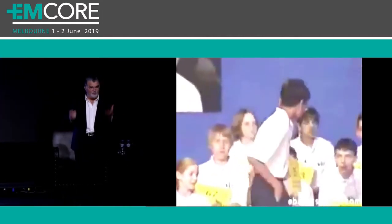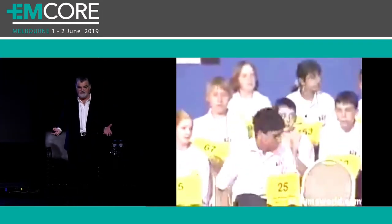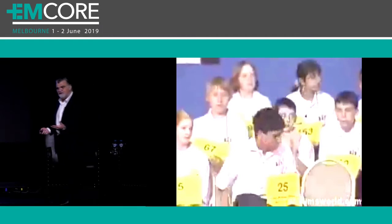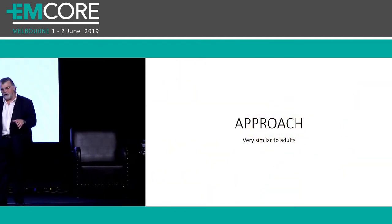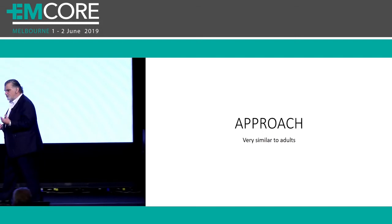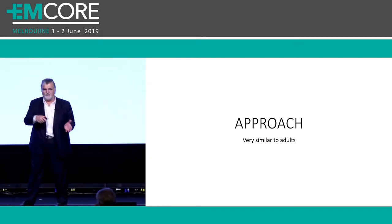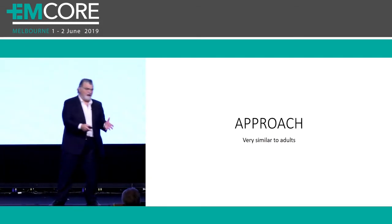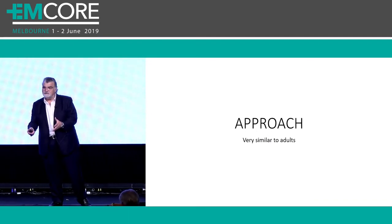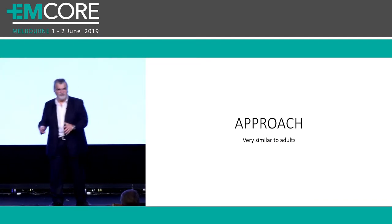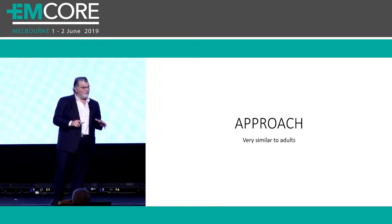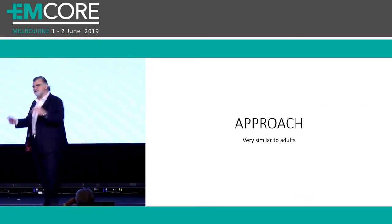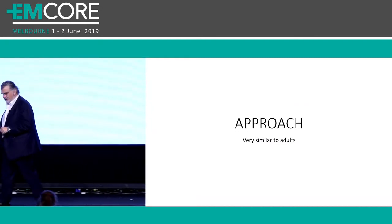The approach is very similar to adults. In terms of the way we should be thinking about this — is it cardiac or is it not cardiac? If it's not cardiac, is it some kind of neurological problem? If it's not a neurological problem, all the other causes become less important. In fact, cardiac causes of syncope are probably the most important cause of syncope we're going to encounter.